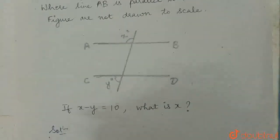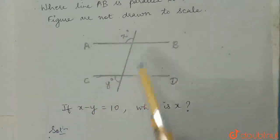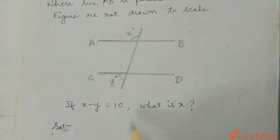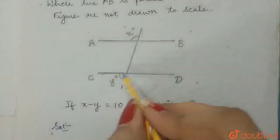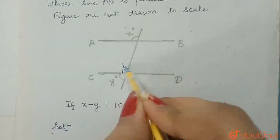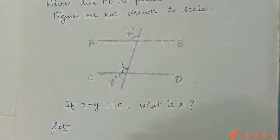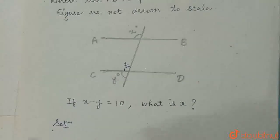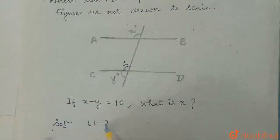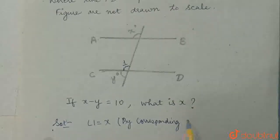Our solution will be: we know that AB is parallel to CD and this line is a transversal for these two parallel lines. By the properties of the parallel lines and a transversal cutting the parallel lines, we can say that this angle and if we denote this angle by 1, then these two angles are equal by the property of corresponding angles. So angle 1 is equal to x by corresponding angles.